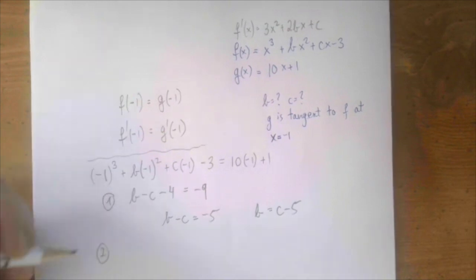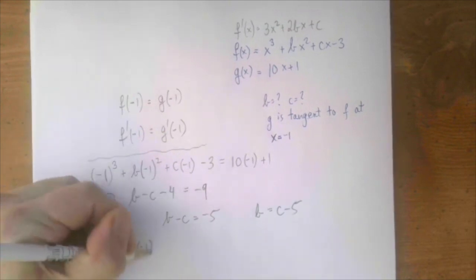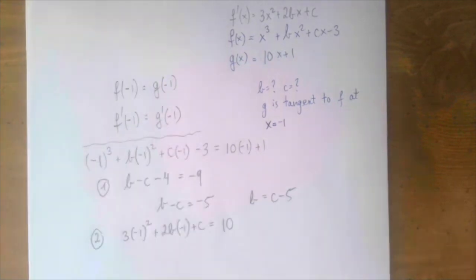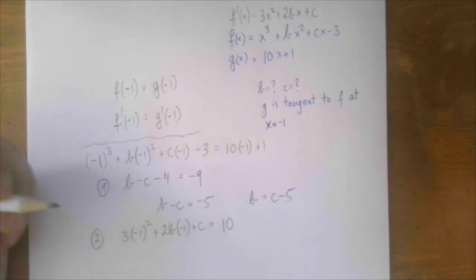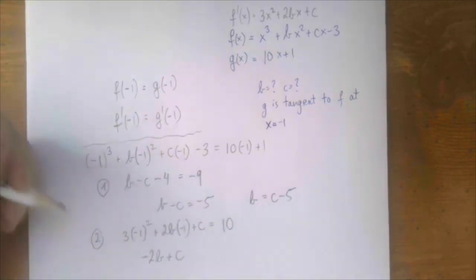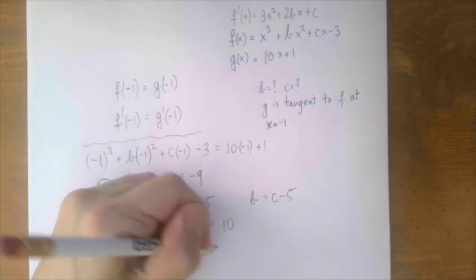The second equation: 3(-1)² + 2b(-1) + c = 10, which is g' everywhere. This gives us -2b + c + 3 = 10.